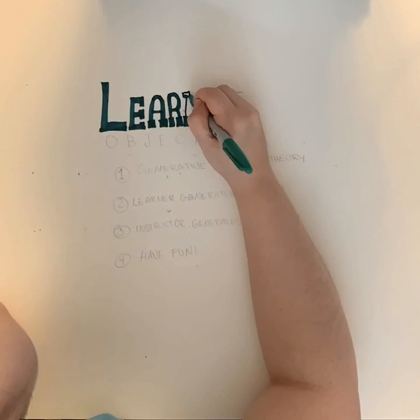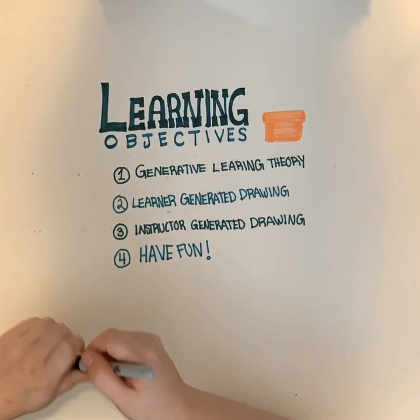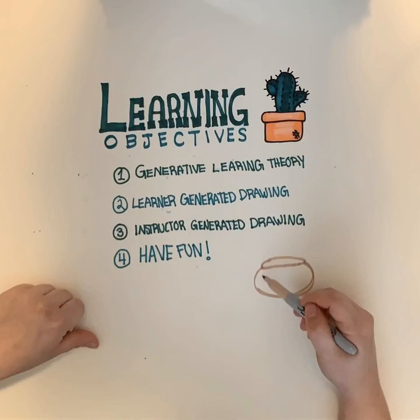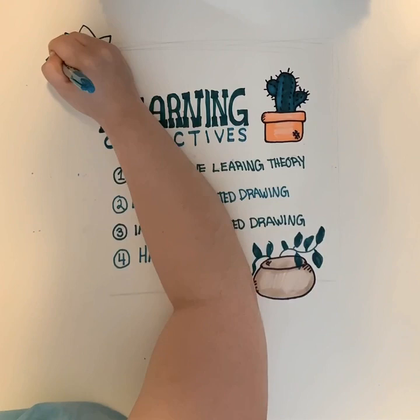Let's talk about the objectives for this course. After watching this video, you should be able to paint the Mona Lisa — just kidding. First, I would like you to gain a greater understanding of the generative learning theory and be able to identify examples of this theory in the outside world. Second, you should be able to define the practice of learner-generated drawing and hopefully be able to practice it yourselves. Third, everyone will be able to implement instructor-generated drawing. Last but not least, have fun — even though I can't supply candy for this class, I bet you guys can imagine it.